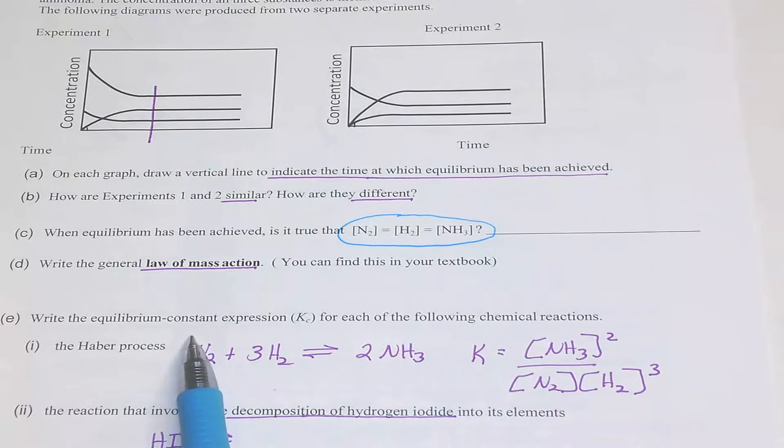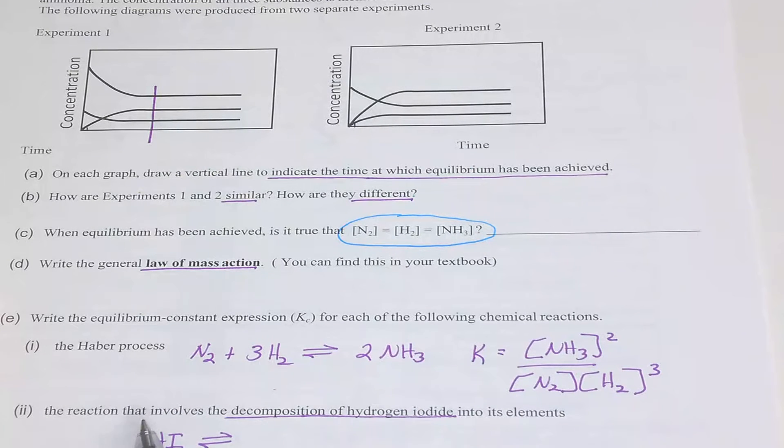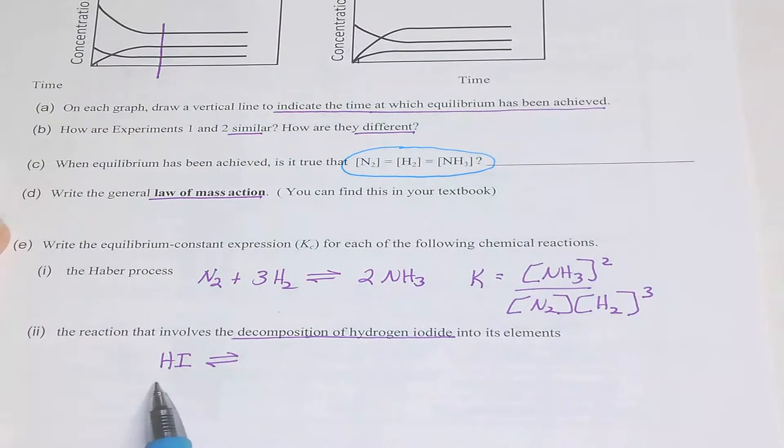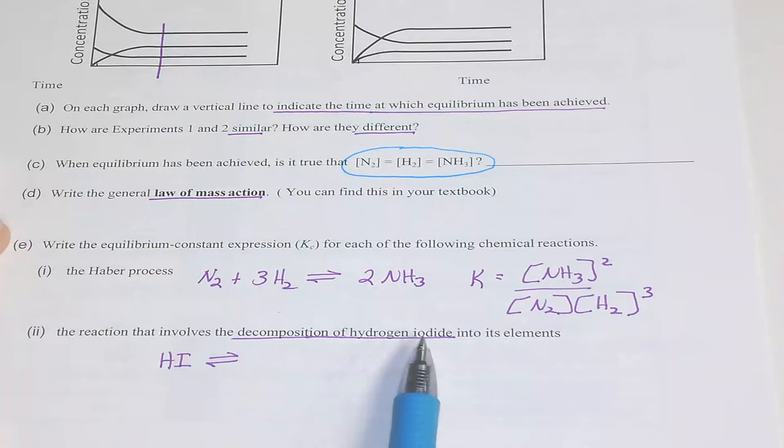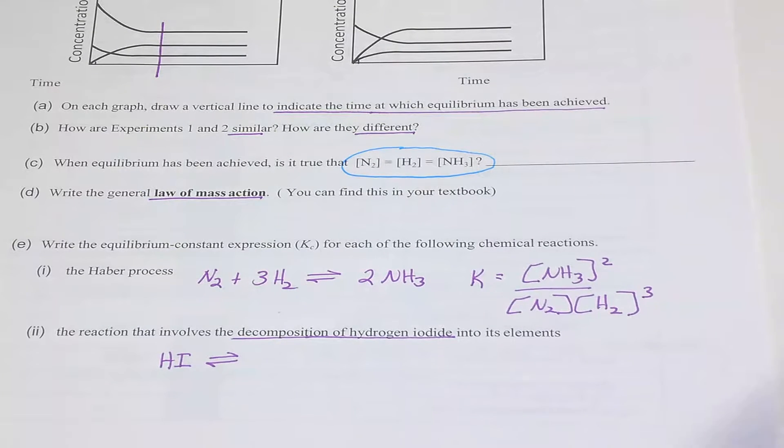Here's the equilibrium constant expression for the Haber process. Do this for the decomposition of hydrogen iodide into its elements. So write the equation and then write the equilibrium expression.